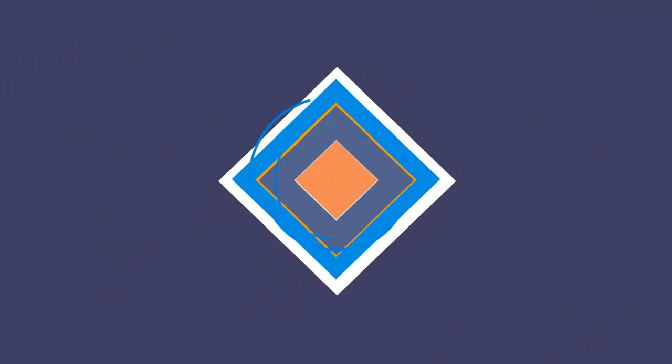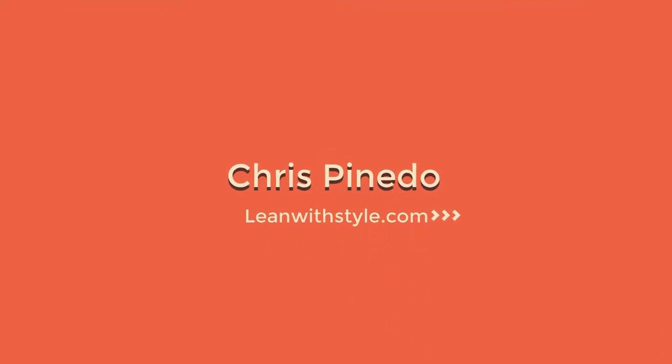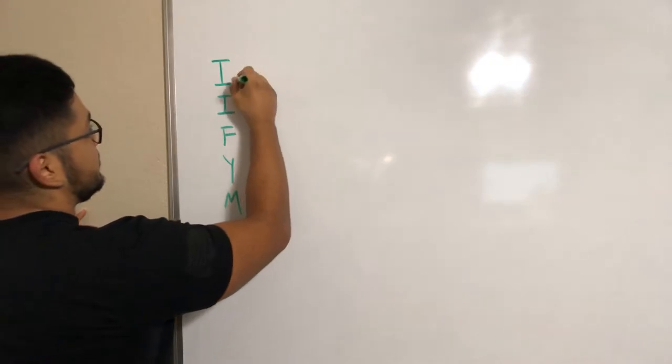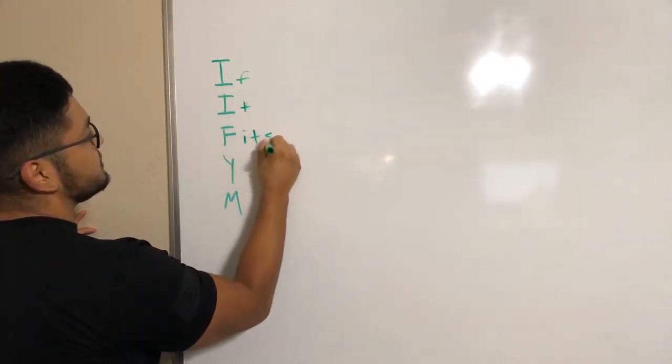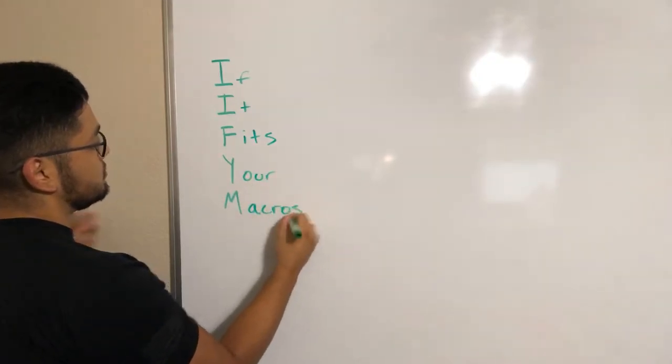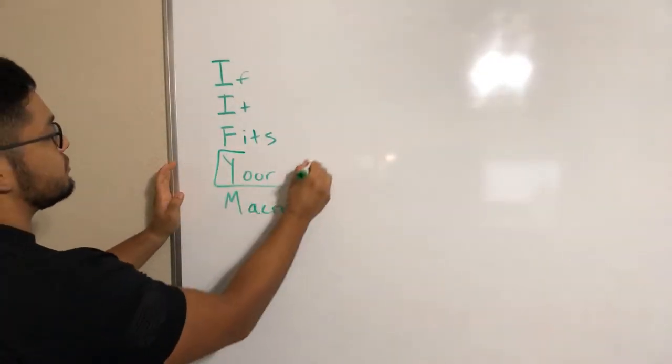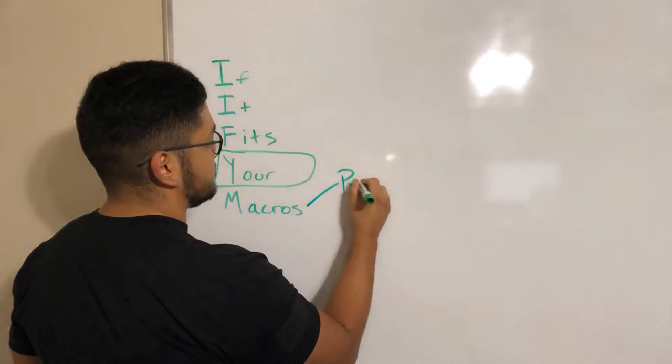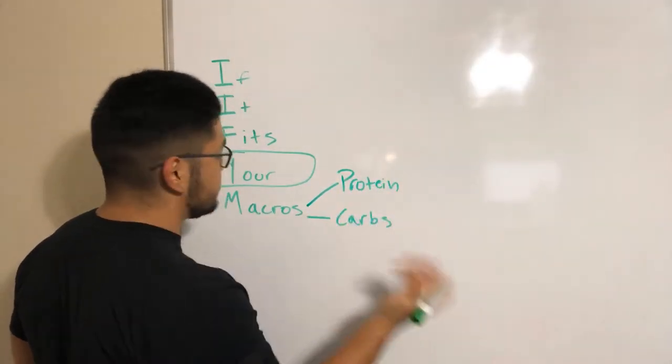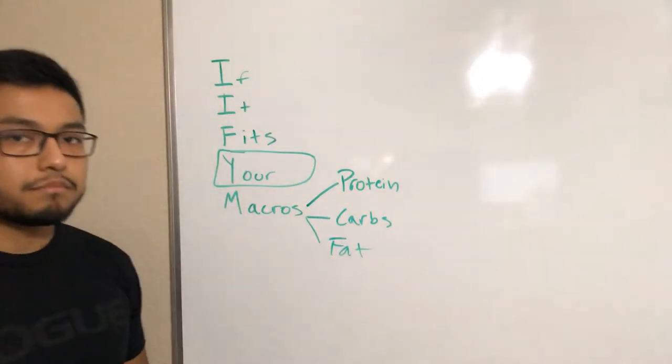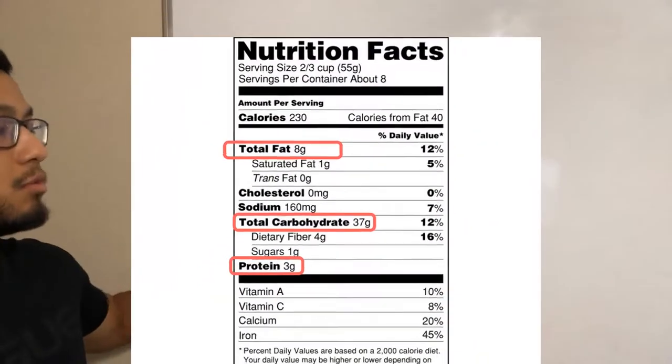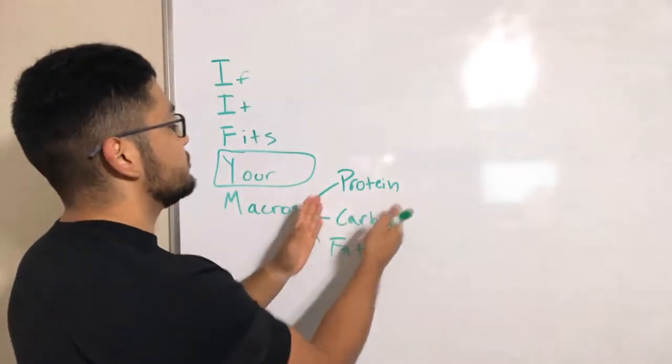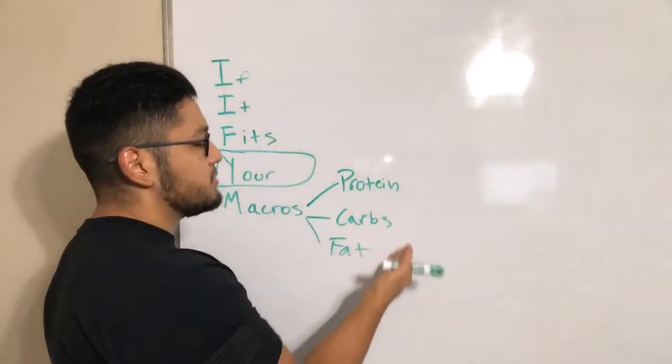IIFYM is simply an acronym for if it fits your macros. Everybody's macronutrient needs are different. That's why it's your macros. There are three macros: protein, carbohydrates, and fat, dietary fat. Every food that you have eaten on the nutrition label will have these three on there, I promise you.